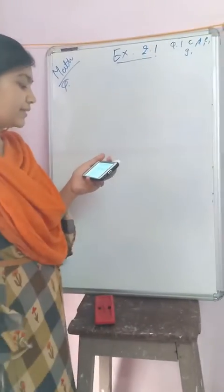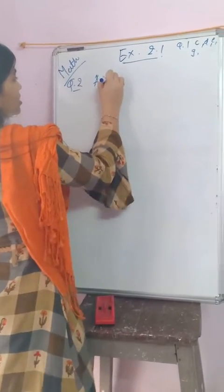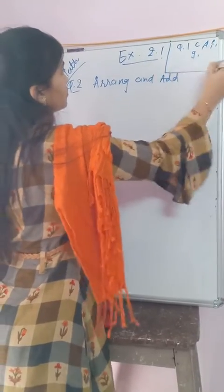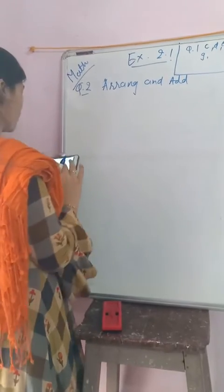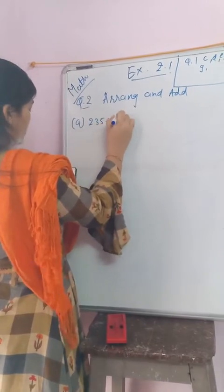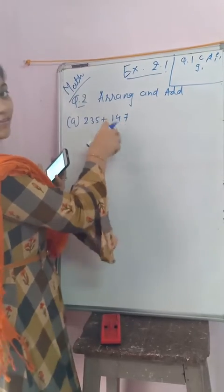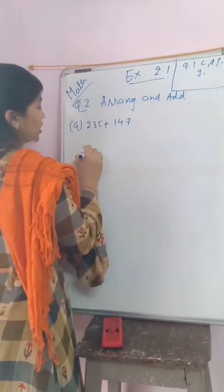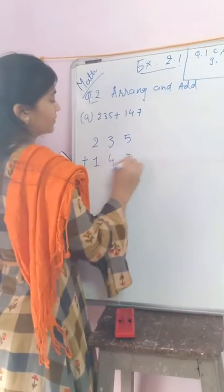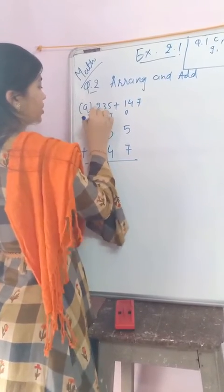Arrange the numbers vertically in columns and add. So first of all, I am solving a1: 235 plus 147. This is given horizontally, and we have to arrange this number vertically. So 235 plus 147 — ones, tens, hundreds.